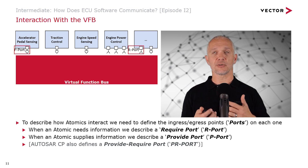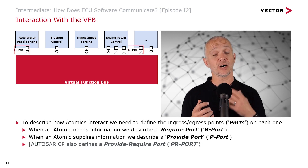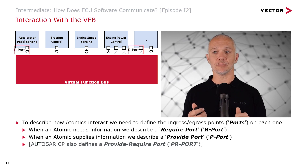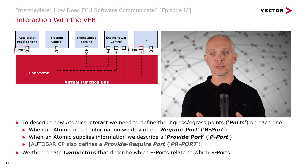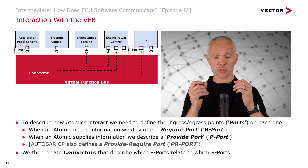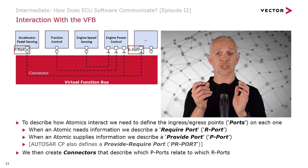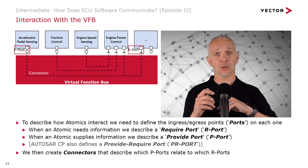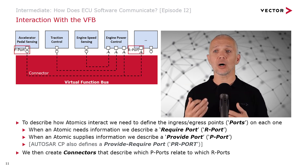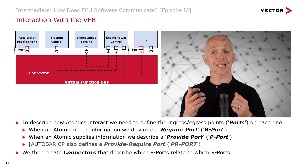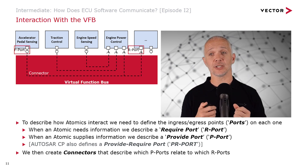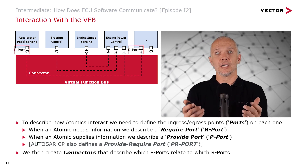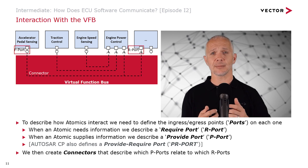AUTOSAR also provides the concept - if you'll forgive the pun - of a provide-require port. It's advanced; we won't talk about that more, just know that it's technically possible to have effectively a bidirectional port. What we then do, once we've defined all our P ports and R ports, is create connectors that describe which P ports relate to which R ports. Our end aim is that all R ports that need information should be connected to a P port that provides that information. If we don't end up in that situation, clearly we've got some software somewhere that can't get the information it needs to function - and that's a bad thing.